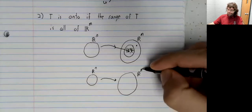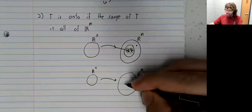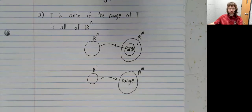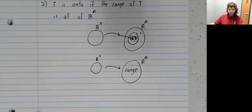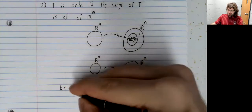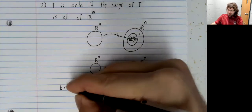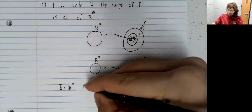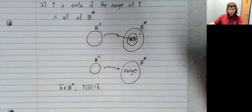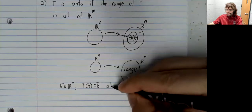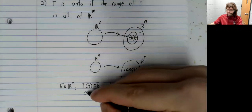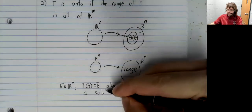If R^M itself is the range of this transformation. Another way of saying this would be that for any vector B in R^M, the equation T of X equals B always has a solution.